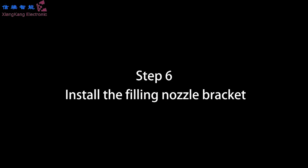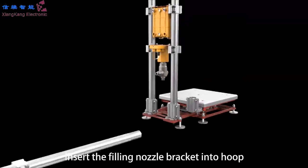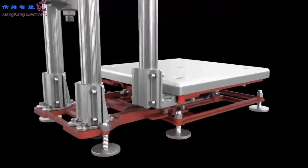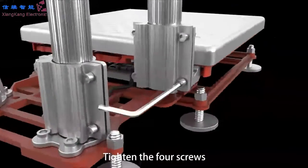Step 6: Install the filling nozzle bracket. Insert the filling nozzle bracket into hoop. Tighten the four screws.